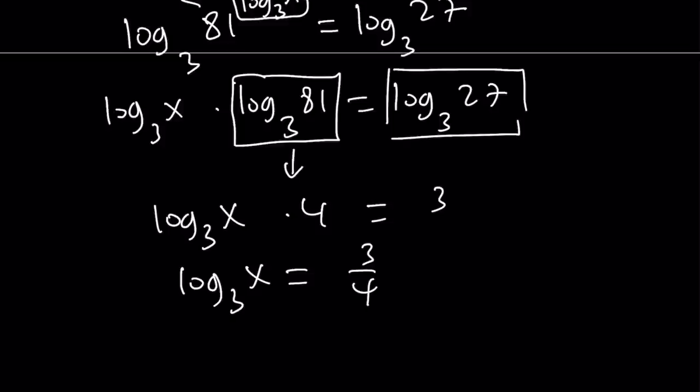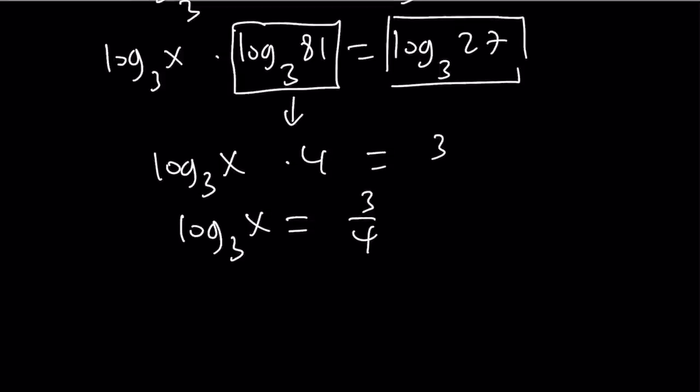And as our definition or rule from before, this is equal to x is equal to 3 to the power 3 fourths. And as you know, this is the same thing as 4th root of 27. Awesome. We get the same answer.